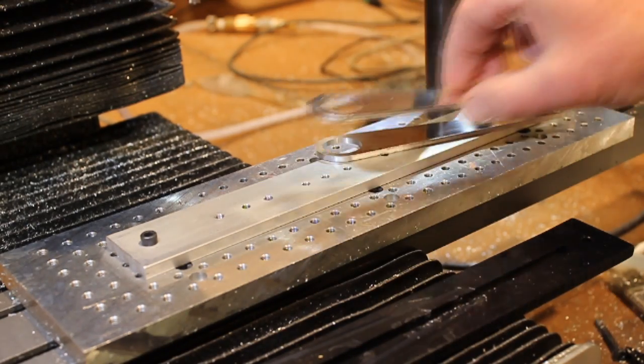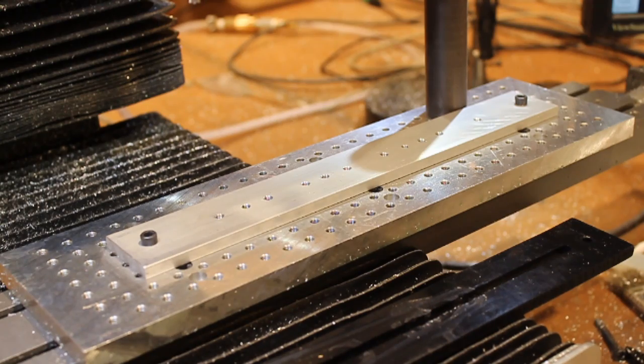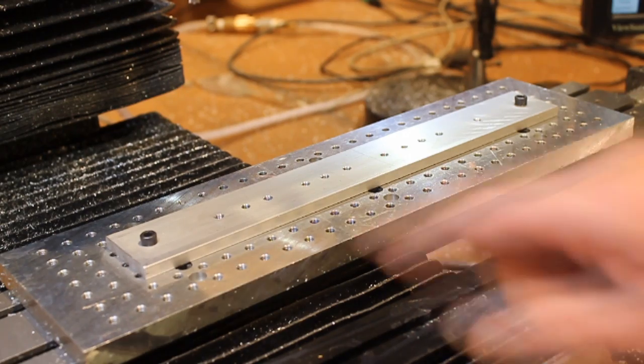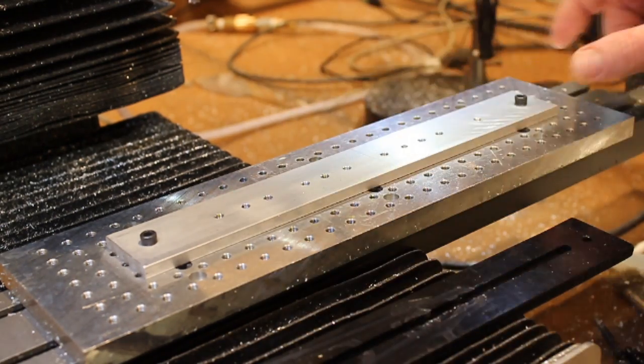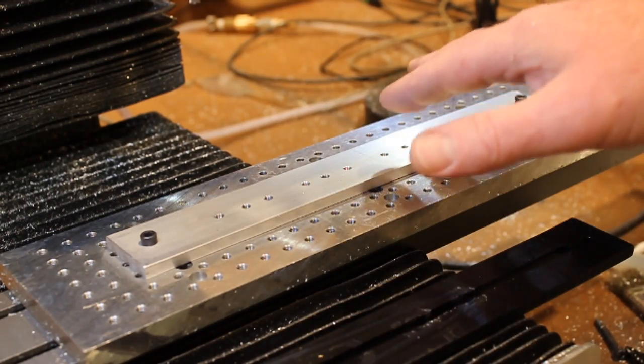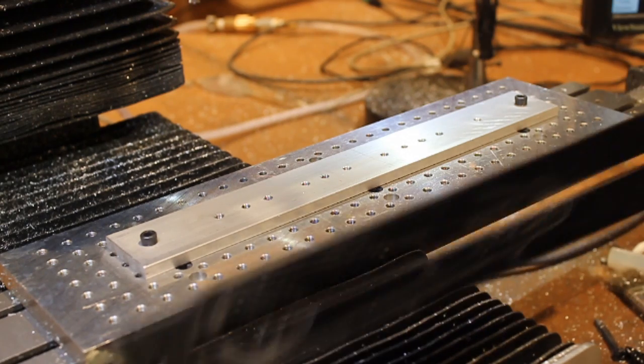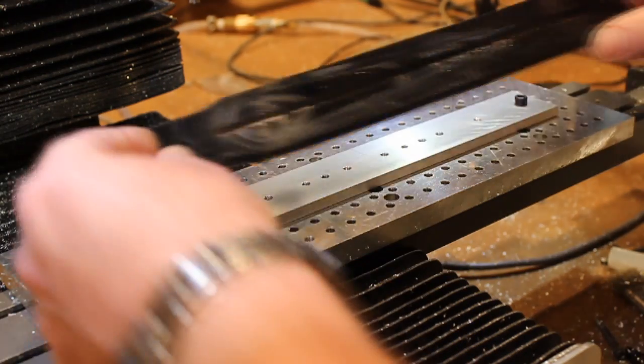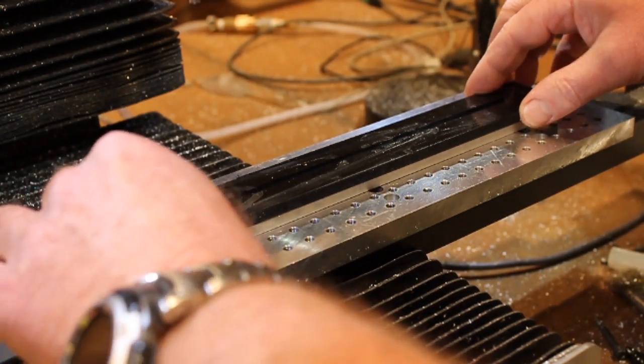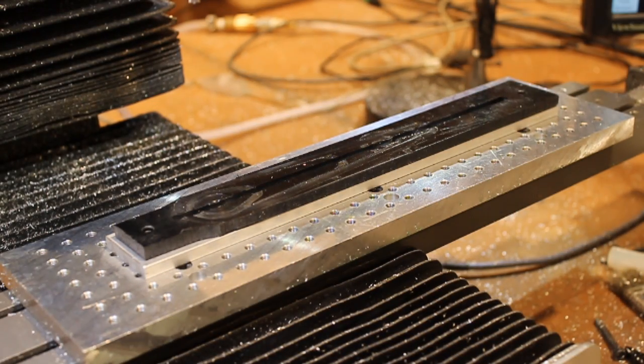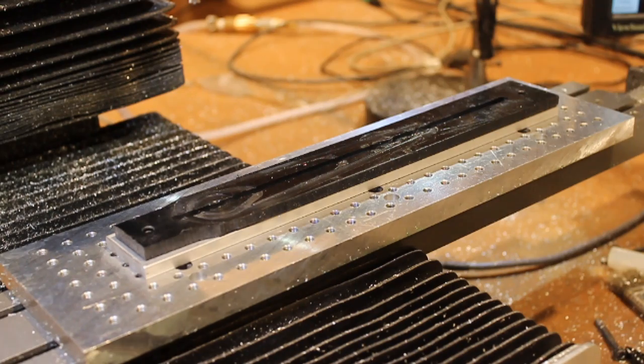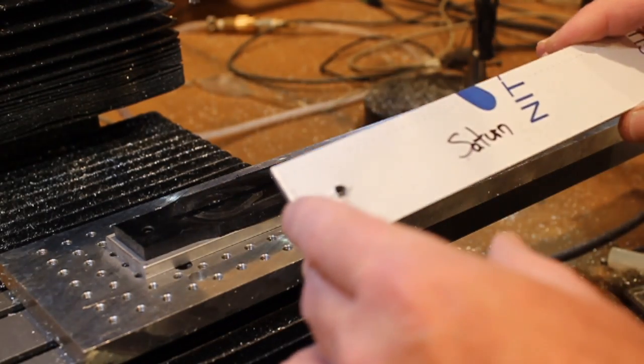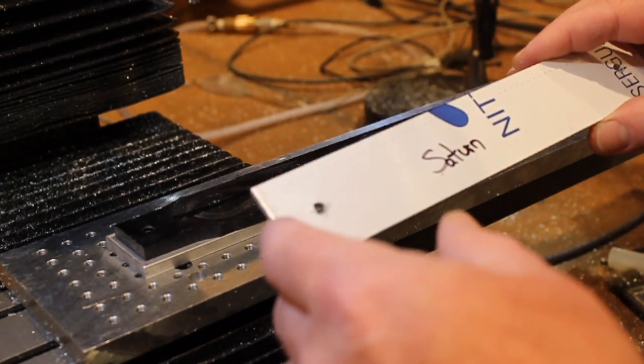To make these, I've created a fixture here that has threaded holes for all of the various lengths, so this fixture actually is such that I can make all of them using this. I'm just using a piece of ABS as a backer to cut into so I don't destroy the fixture, and then the blanks have been drilled with positioning holes to hold them down.